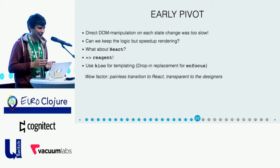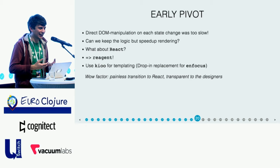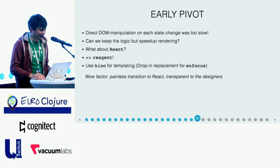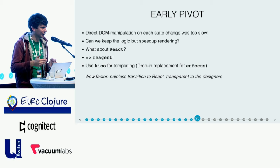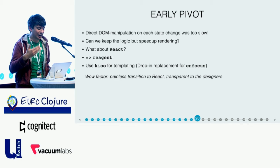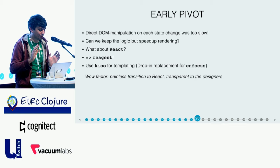Sadly, not everything was rosy, because once we started to test this application on small devices, it turned out that manipulating the DOM directly was super slow. But we really liked the way we wrote the application — having the whole state in one place and then deriving the view from that state. So we were wondering: can we keep that logic but just speed up the rendering? And at that time, there was this cool library called React. React seemed to address exactly this issue. We were a bit worried because it seemed to be pretty big, so we didn't want to introduce it too early. But since we felt that this was starting to get to be a pain point and we didn't want to optimize our rendering logic manually, maybe React could be a good fit. So we looked at our options and settled for a library called Reagent.